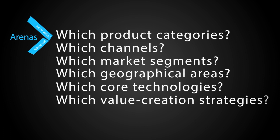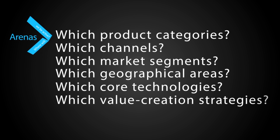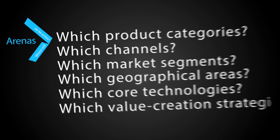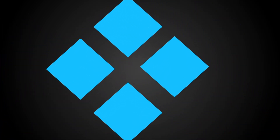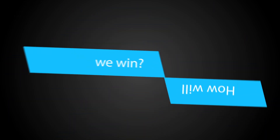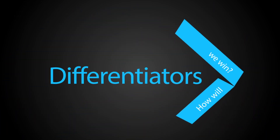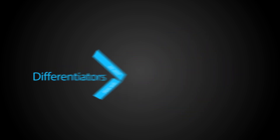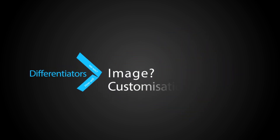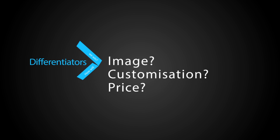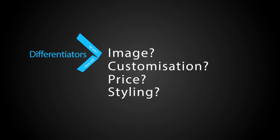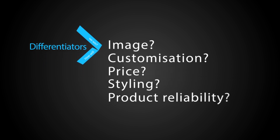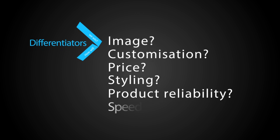For example, if you're going to sell to farmers, you might say we are not going to supply the general public, or our products are targeted only at farmers. Having considered which markets we will play in, we now look at how we will ensure that we will win in those marketplaces. What are our differentiators? Will we win through, for example, image, customization, price, styling, product reliability, or speed to market?